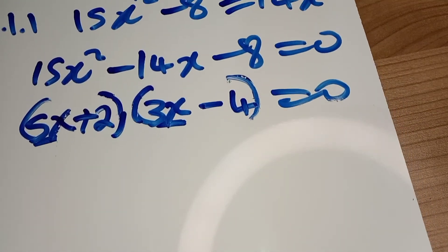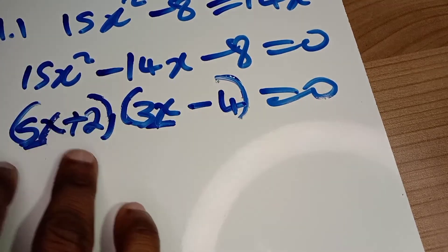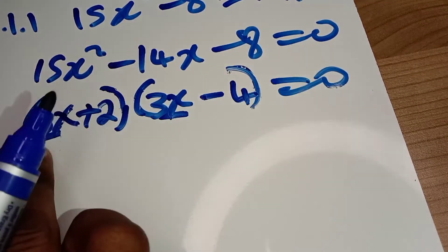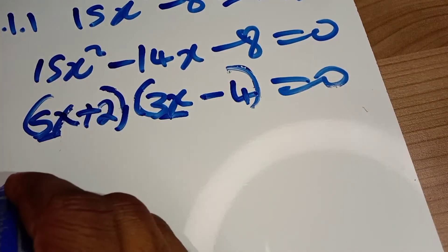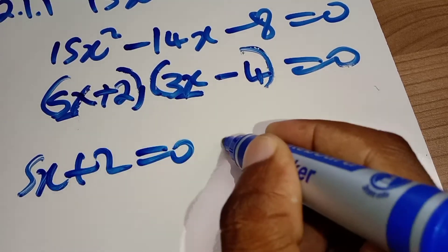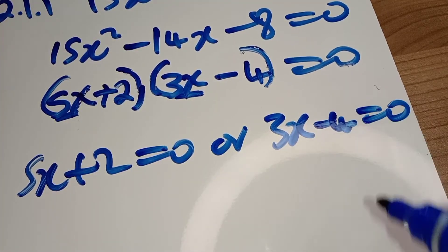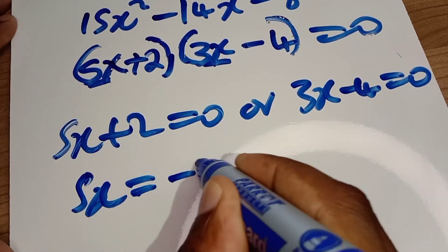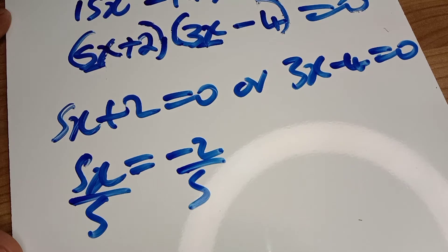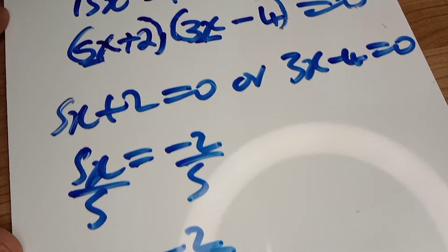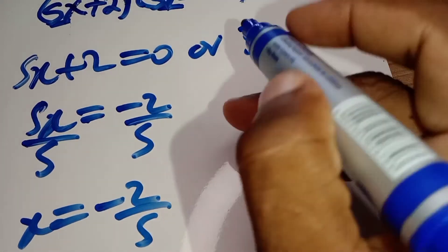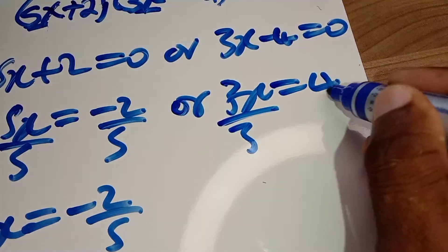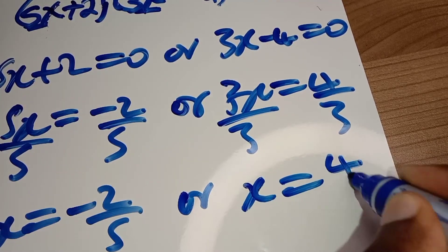We now have two binomials multiplying each other equal to zero, so we can use the zero product property — one or both brackets equal zero. We get: 5x + 2 = 0 or 3x − 4 = 0. For the first: 5x = negative 2, divide by 5, so x = negative two over five. For the second: 3x = 4, divide by 3, so x = four over three.